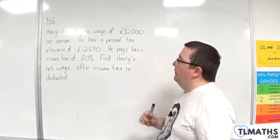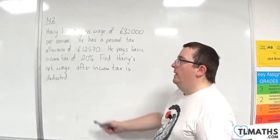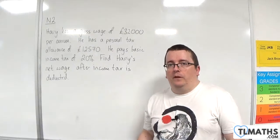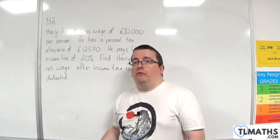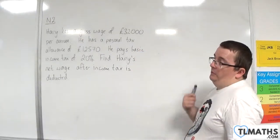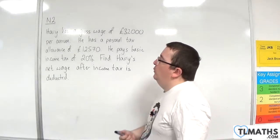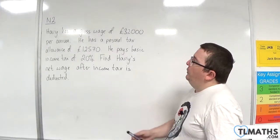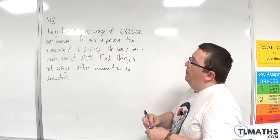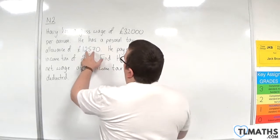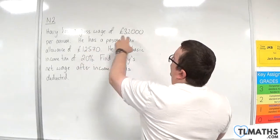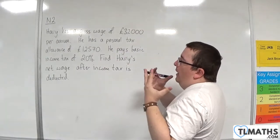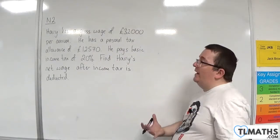Find how his net wage after income tax is deducted. The net wage is how much he takes home. We're going to ignore national insurance, pension, student loan, and anything like that — we're just going to take away the income tax. The first thing we need to do is subtract the personal allowance from the gross wage, because we need to work out how much of Harry's money can actually be taxed.